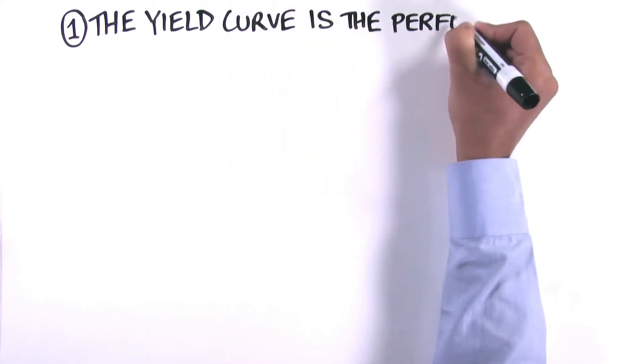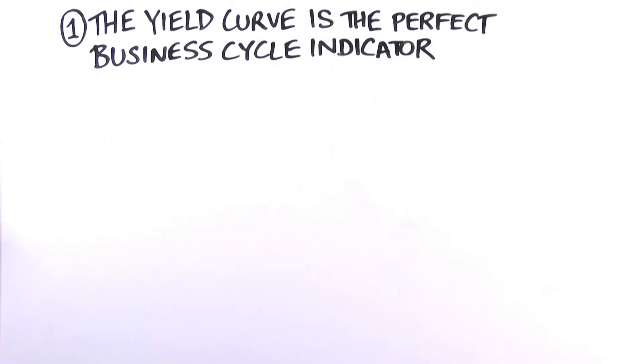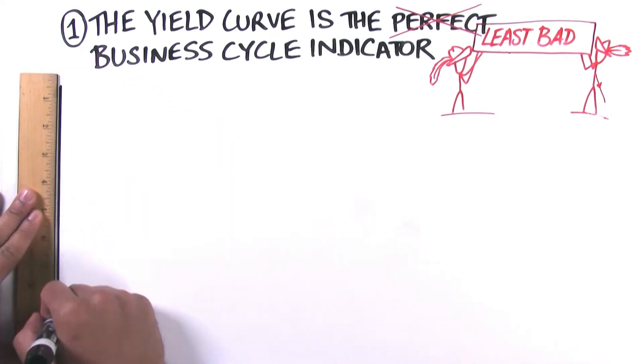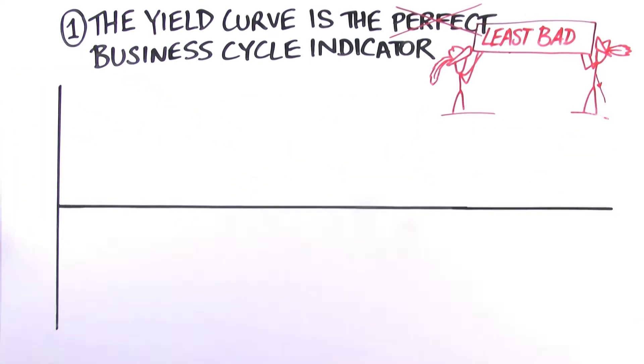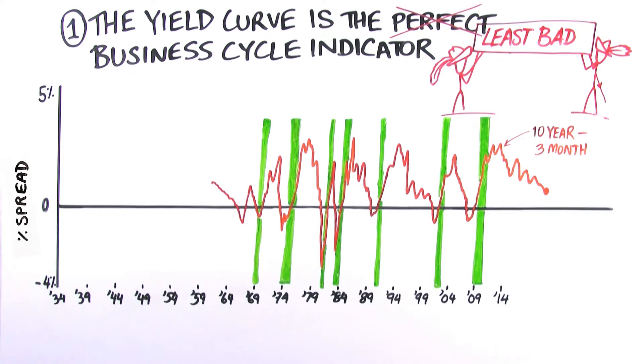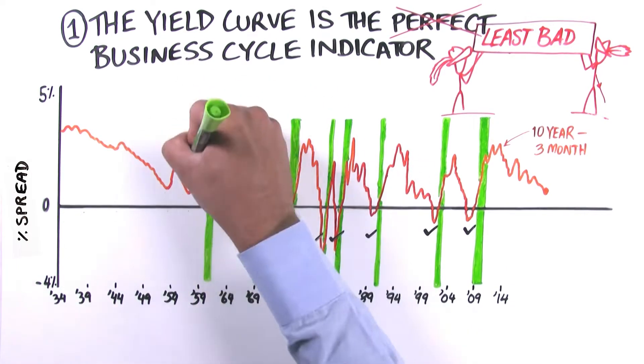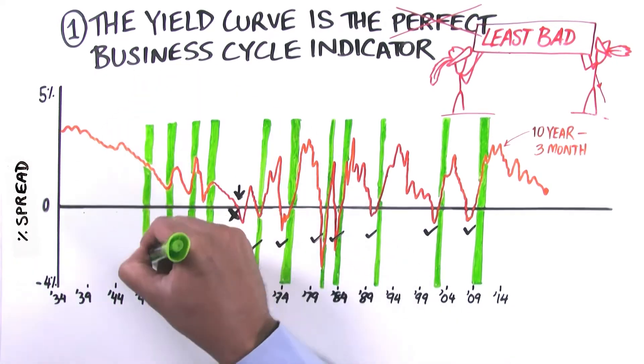Number one: The yield curve is the perfect business cycle indicator. Well, the yield curve is actually the least bad business cycle indicator. The three-month to 10-year yield curve has an excellent track record in the post-war era. The curve inversion preceded every recession in the post-war era, with one exception, the credit crunch of 1966, where the yield curve inverted without a recession following. But the yield curve has a less-than-stellar track record before.